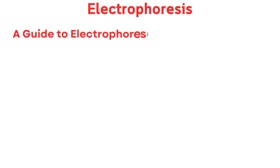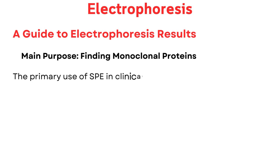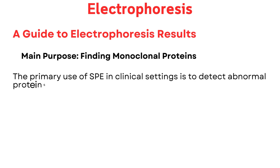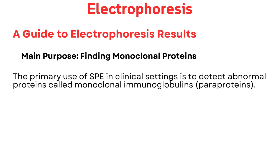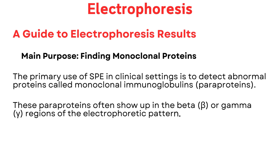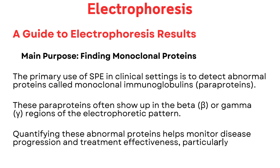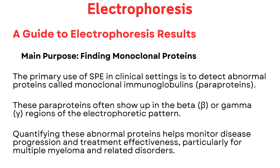Deciphering your blood protein profile — a guide to electrophoresis results. The primary use of serum protein electrophoresis (SPE) in clinical settings is to detect abnormal proteins called monoclonal immunoglobulins, or paraproteins. These paraproteins often show up in the beta or gamma regions of the electrophoretic pattern. Quantifying these abnormal proteins helps monitor disease progression and treatment effectiveness, particularly for multiple myeloma and related disorders.